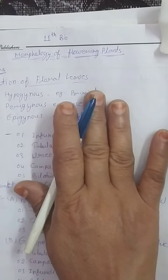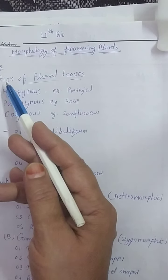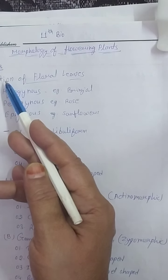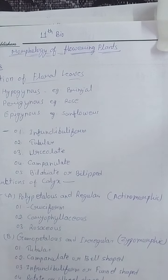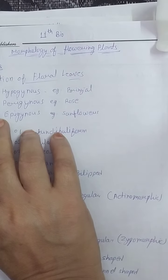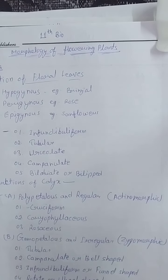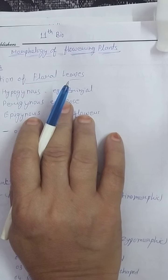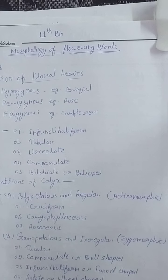Good morning students. We learned about morphology of flowering plants in our previous lecture — what is the structure of flower, function of flowers, and symmetry of flower. Today we will learn about insertion of floral leaves. The position of other floral parts as compared to the gynoecium on the thalamus is known as insertion of floral leaves.